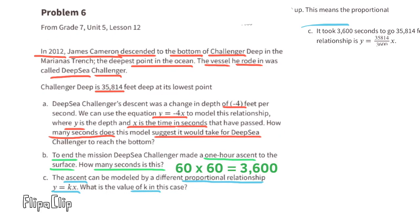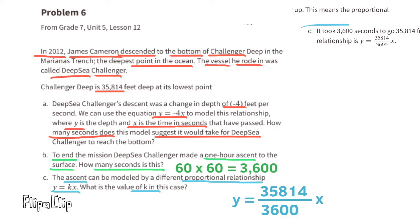Part c: the ascent can be modeled by a different proportional relationship, y equals k times x. K is the constant: the distance traveled up during the ascent divided by the number of seconds it took, which was 3,600 seconds. So y equals k times x, where k equals 35,814 over 3,600.